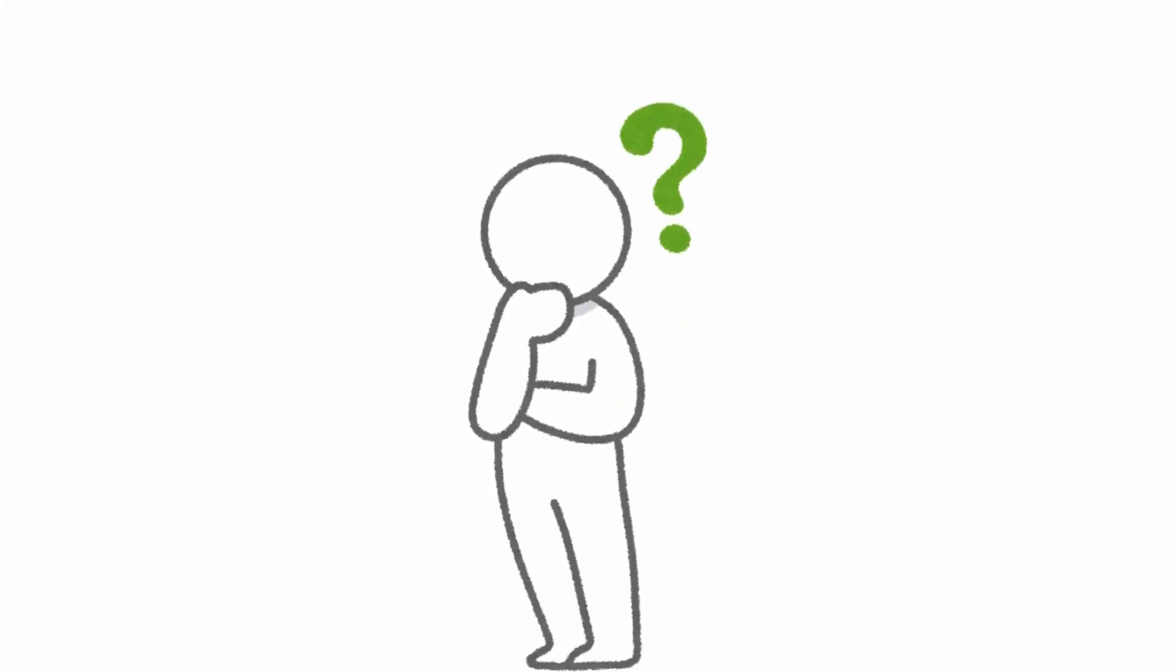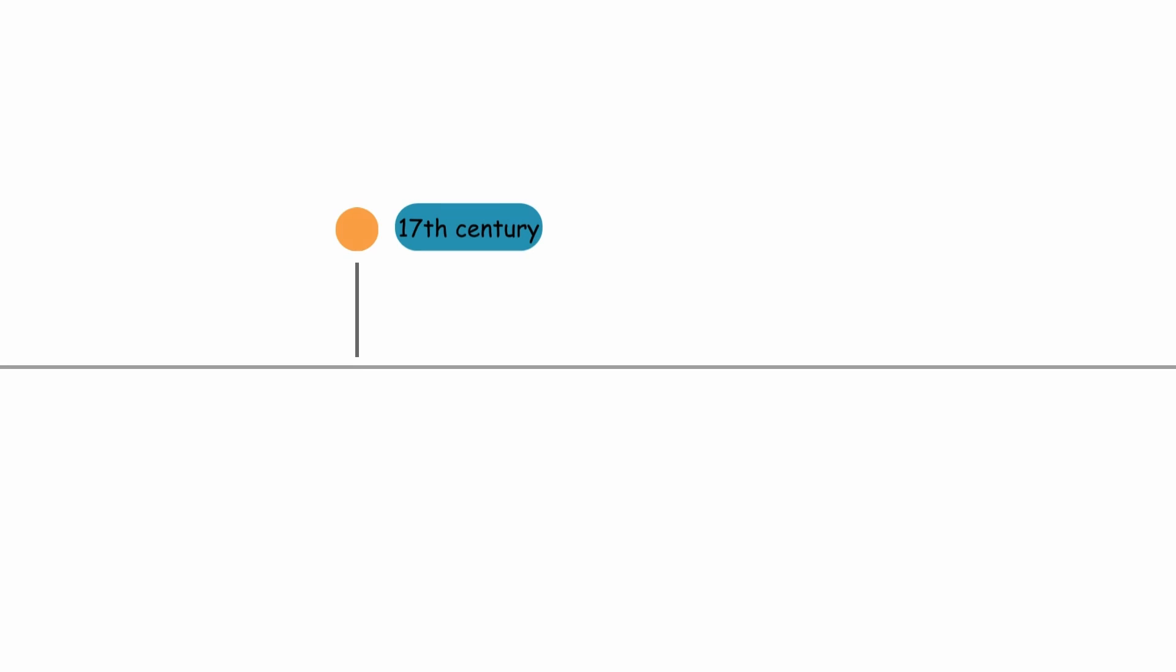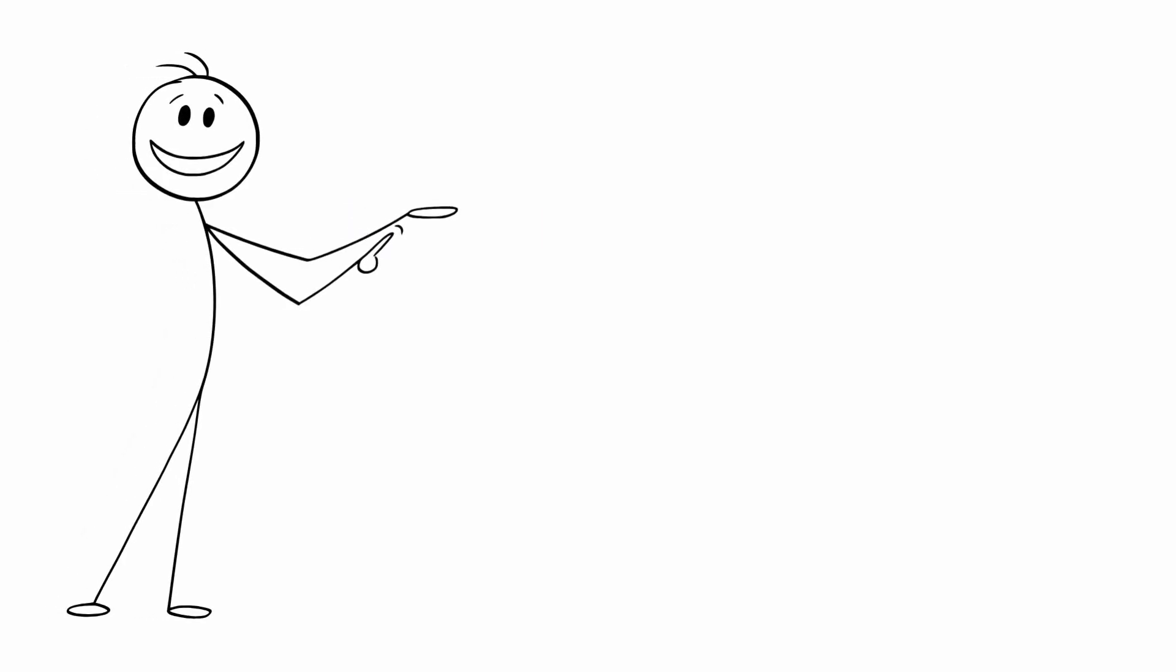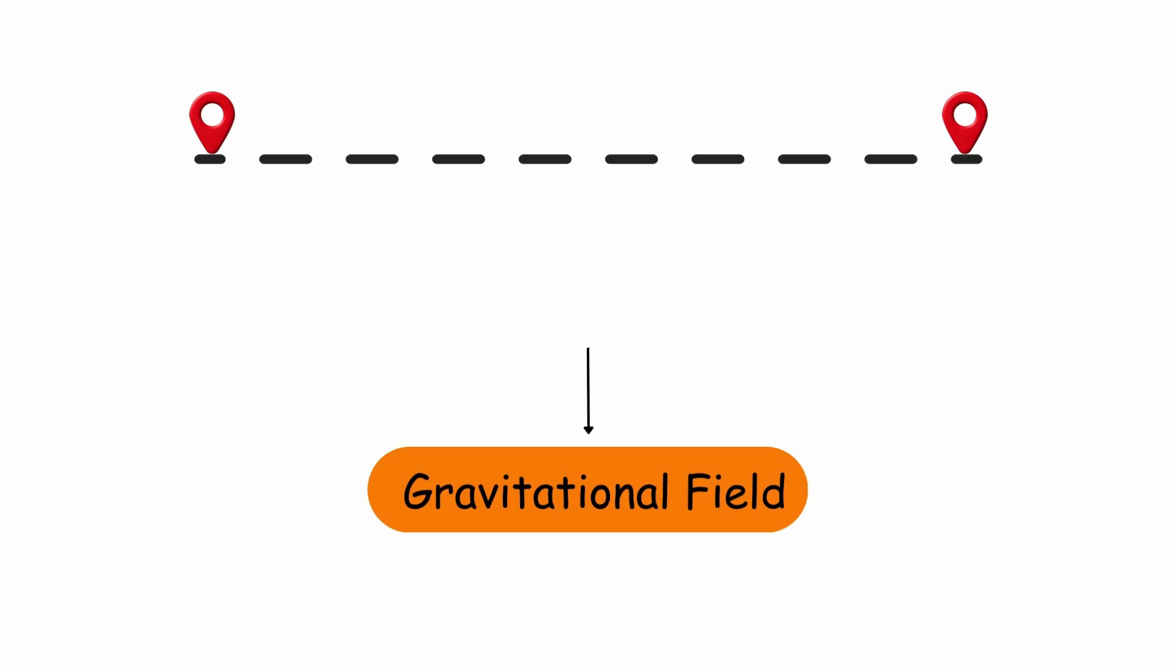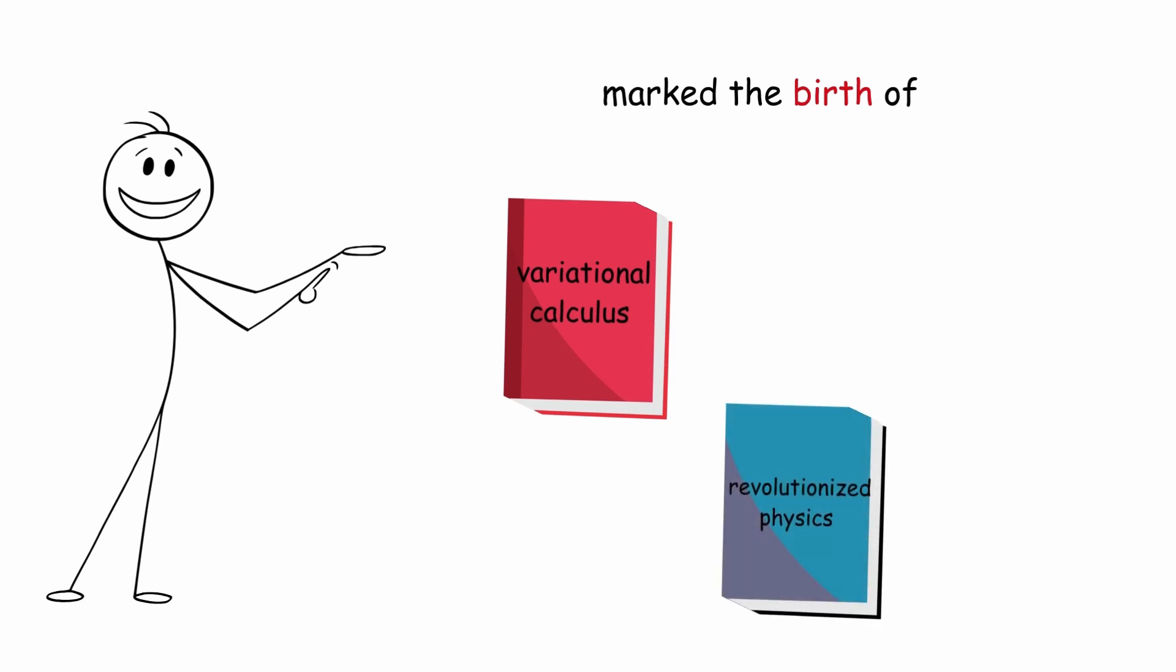One of the most fascinating problems in the history of mathematics is the Brachistochrone problem. Posted in the 17th century, it seeks to answer a seemingly simple question: What is the fastest path between two points in a gravitational field? This problem marked the birth of variational calculus and revolutionized physics and mathematics.